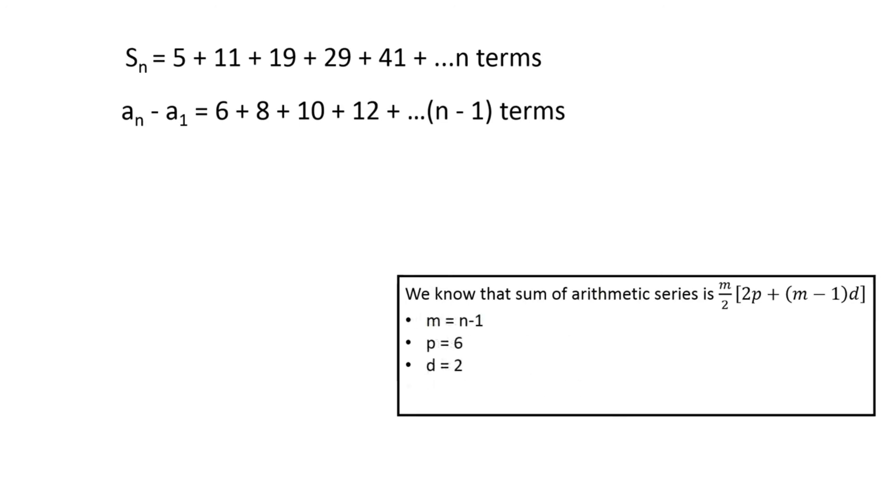In the present case, m equals n-1, p equals 6, and d equals 2. Using this formula to find the sum of this arithmetic series, we get an minus a1 equals n² plus 3n minus 4.